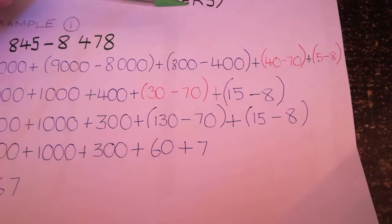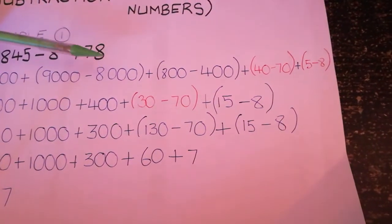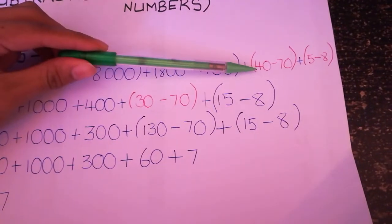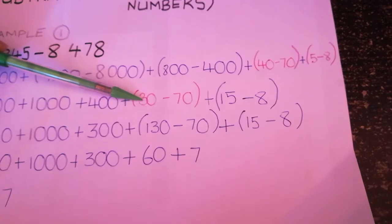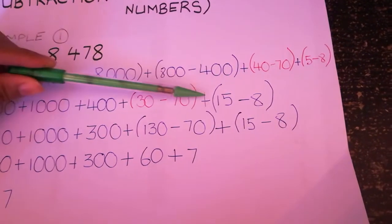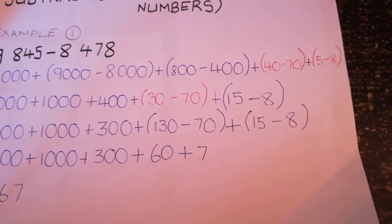That's why I started borrowing from there. I took the 10 from the 40 here, and I gave it to the 5. So that 40 became 30. So we have 15 minus 8. 15 can minus 8, so that is fine. Now we are going to move on.